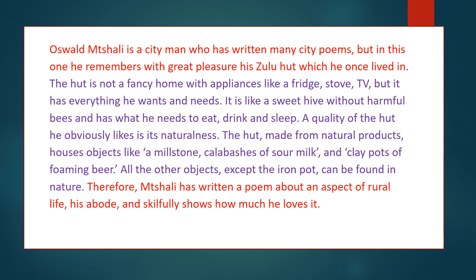Oswald Mchali is a city man who has written many city poems, yet he remembers with great pleasure his Zulu Hut which he once lived in. The hut is not a fancy home with appliances like a fridge, stove, or TV, but it has everything he wants and needs. It is like a sweet hive without harmful bees and has what he needs to eat, drink and sleep. A quality of the hut he obviously likes is its naturalness. The hut, made from natural products, houses objects like a millstone, calabashes of sour milk and clay pots of foaming beer. All the other objects except the iron pot can be found in nature. Therefore, Mchali has written a poem about an aspect of rural life and skillfully shown how much he loves it.